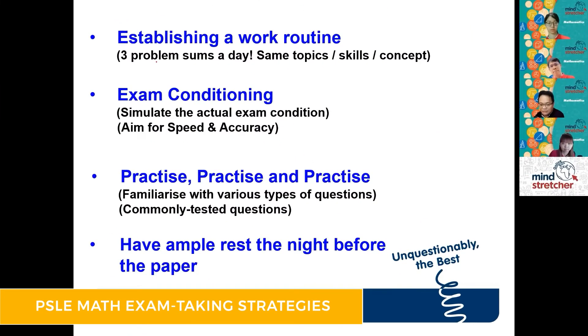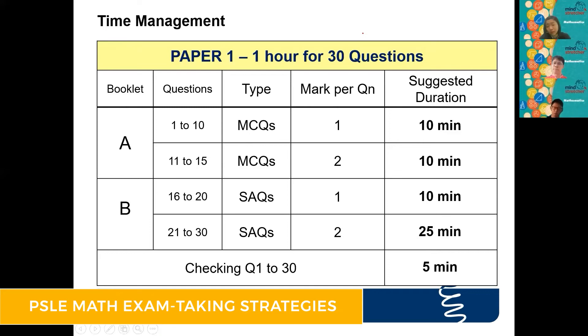Time management is an issue. For 25 marks as total over here, your target should be between 20 to 25, okay?